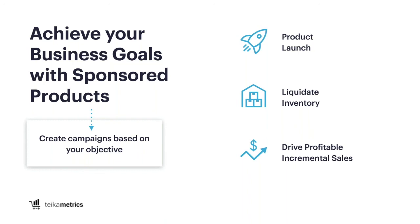The second bucket is liquidating inventory. Sellers use this with a lot of success when they're coming up against long-term storage fees and have a product they're looking to discontinue. Rather than paying to have it removed or shipped back or selling it on another platform, you can get additional views through sponsored products. This is especially effective after the holidays with excess inventory that you thought would sell through and didn't.